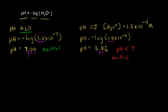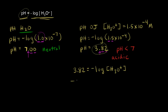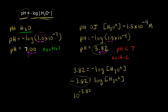Let's talk about going in reverse. If they give you the pH and ask you for the concentration of hydronium ions — let's use 3.82 — you start with pH equals negative log of H3O+. Moving the negative sign to the left gives negative 3.82 equals log of H3O+. To solve for the concentration of H3O+, we take the anti-log, which is 10 to the negative pH, so 10 to the negative 3.82.